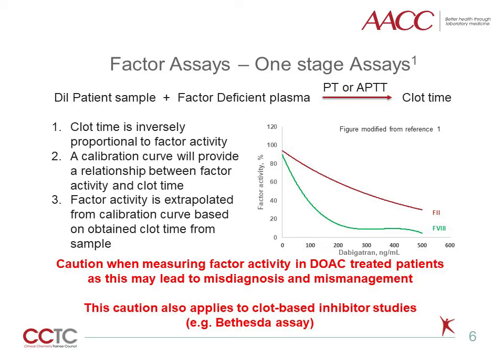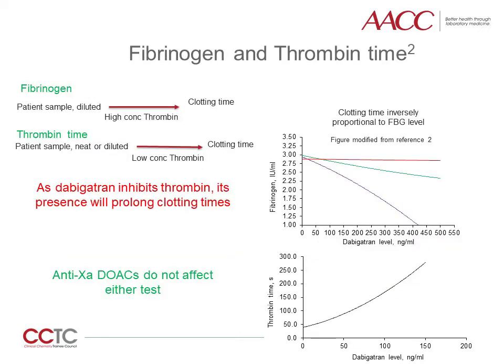This caution also applies to clot-based inhibitor assays, such as the Bethesda assay, which may suggest the presence of a factor inhibitor. Fibrinogen and thrombin time are similar assays in that thrombin is added to the patient sample, where the difference between the two assays is the sample preparation and thrombin concentration. As thrombin is a test reagent, dabigatran, the direct thrombin inhibitor, will prolong clotting time and result in falsely depressed fibrinogen levels and prolonged thrombin time. Direct factor Xa DOACs will not affect either test. The factitiously low fibrinogen levels are dependent on the dabigatran concentration and the testing protocol, including sample dilution and thrombin concentration.